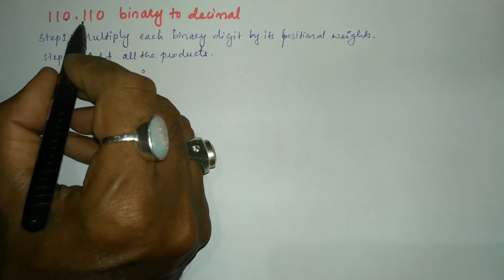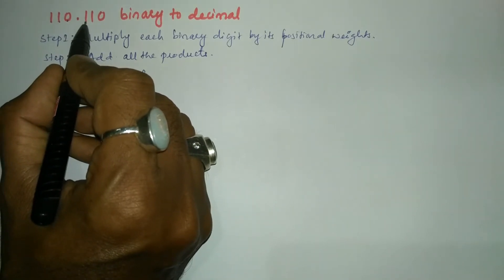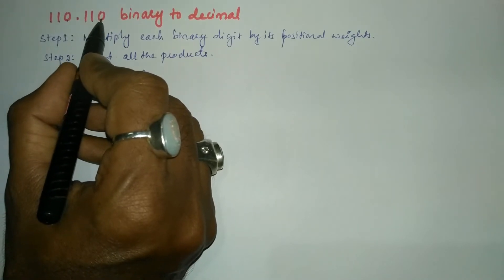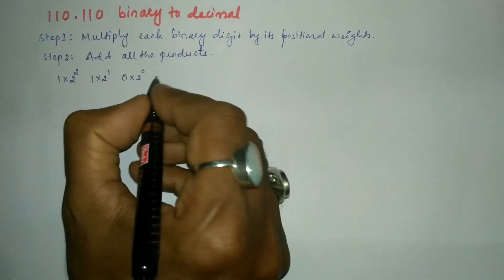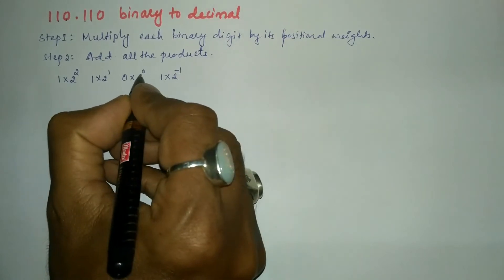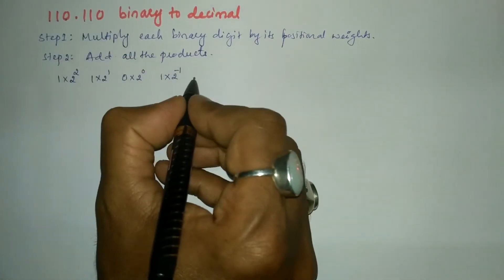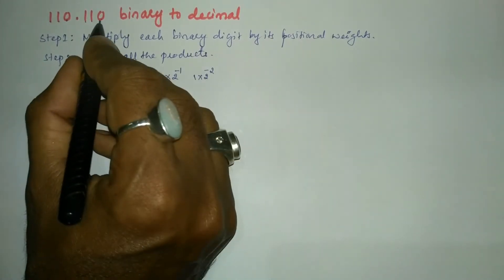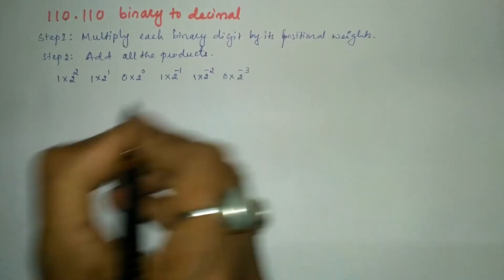After the decimal point, I write the positional weight starting with the first bit: 1 into 2 to the power minus 1. Next bit is 1 into 2 to the power minus 2. And the last bit is 0 into 2 to the power minus 3.